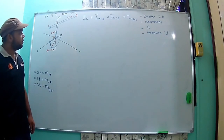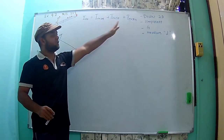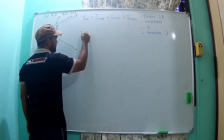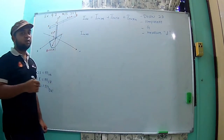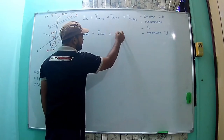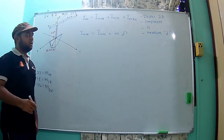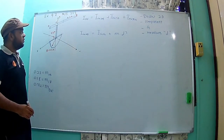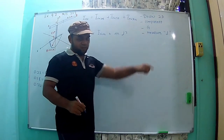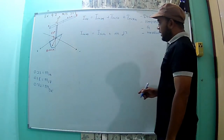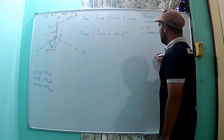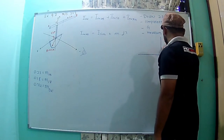Now we will calculate the I for each and every component. We start with the first one: Ixx of AB. We will use the parallel axis theorem, which is equal to I_DG plus M·D². We will draw the 2D view, put the component, find D, and measure it. We are looking for Ixx, so we are looking from this point along the X-X axis.